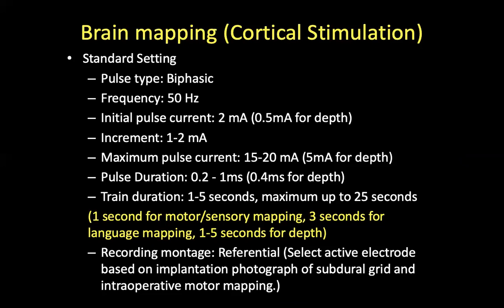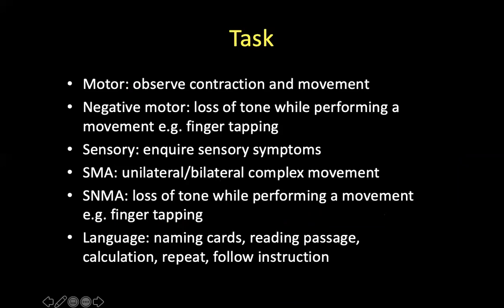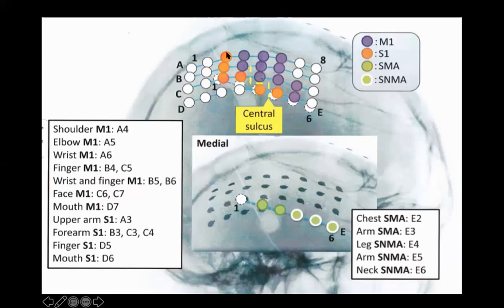The brain mapping settings allow us to test motor area, negative motor, sensory, supplementary motor area, supplementary negative motor area (SNMA), and language area. Language mapping is much better with subdural recording. After completing the mapping, every channel is marked on the brain surface — for example, purple indicates the motor area, orange indicates the sensory area, and the line between them identifies the central sulcus.